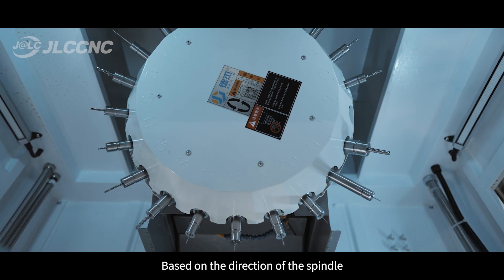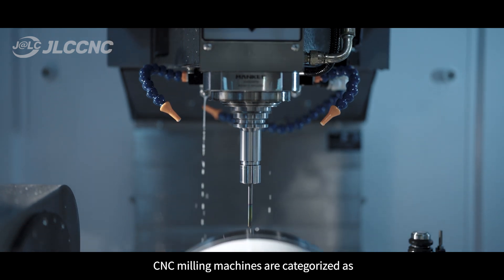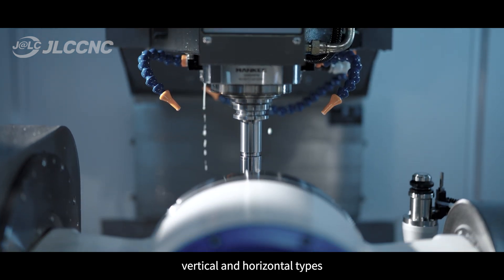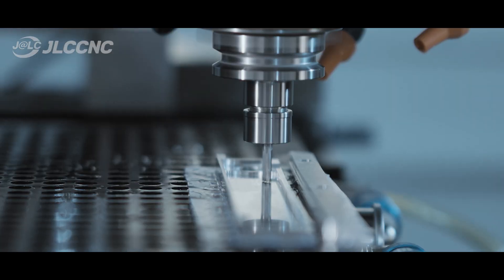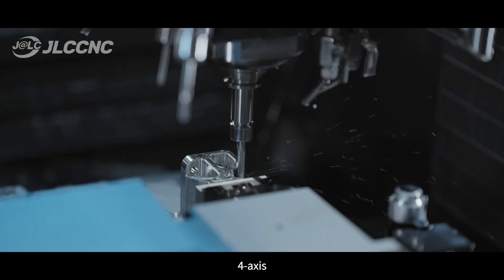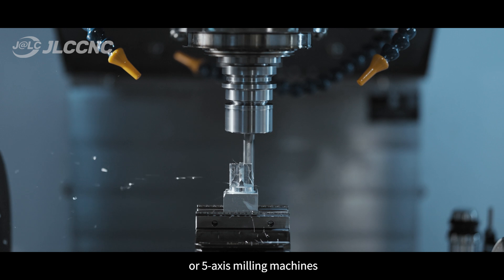Based on the direction of the spindle, CNC milling machines are categorized as vertical and horizontal types. Depending on the number and configuration of axes, they can be 3-axis, 4-axis, or 5-axis milling machines.